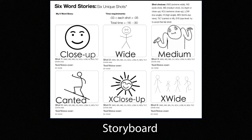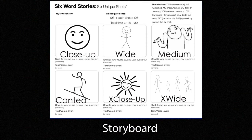The storyboard gives students a lot of parameters. You notice the time requirements, it offers some shot choices, it reminds the students under each box what they're supposed to include. So maybe they could circle the type of shot, write the text or voiceover they're going to use, or add if there's music or sound effects. It's really a great working guide. What I've found is that students, once they complete this storyboard, notice that a close-up didn't quite appear as good as maybe a medium shot, so they change that. Or the students who follow the storyboard exactly are amazed at the result when they look at their final video.